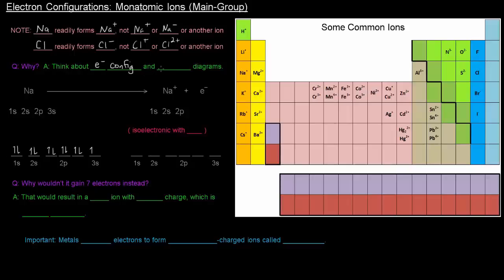To answer this we have to think about the electron configurations and orbital diagrams. Sodium goes to Na+ and loses an electron. The electron configuration starts with 1s2 2s2 2p6 3s1, and the orbital diagram has everything filled up until 3s1.